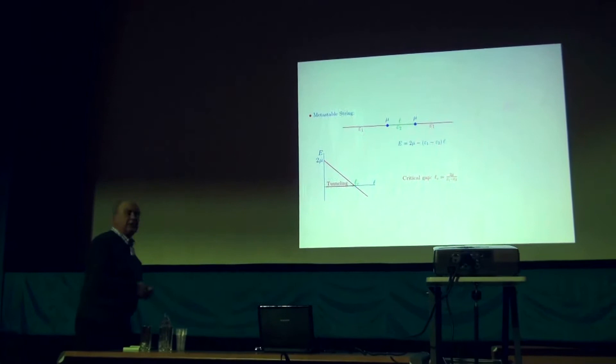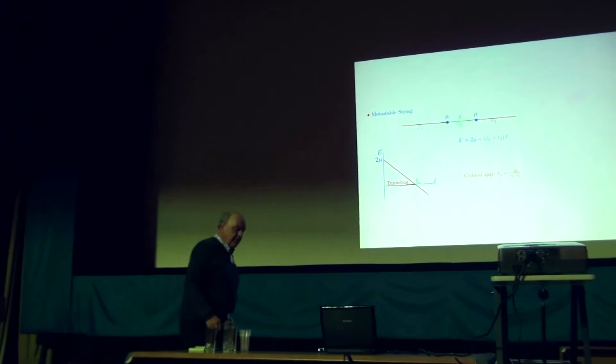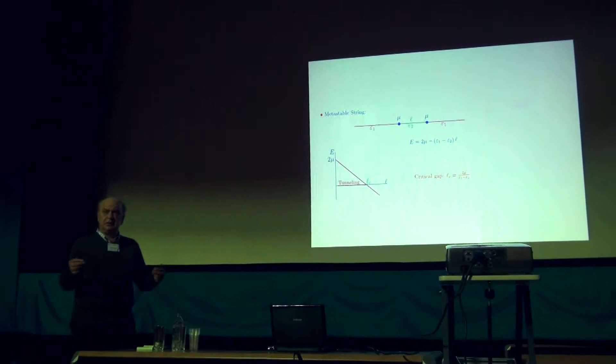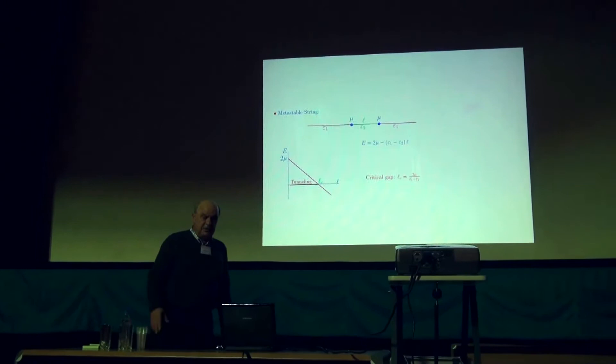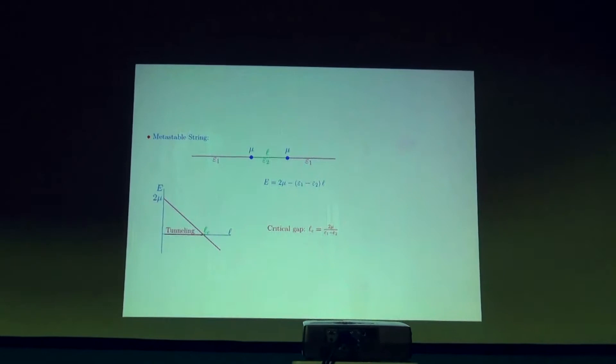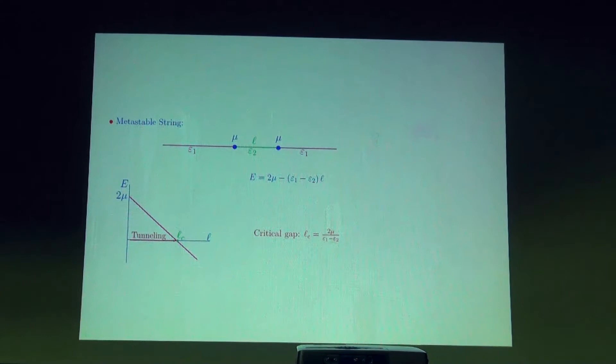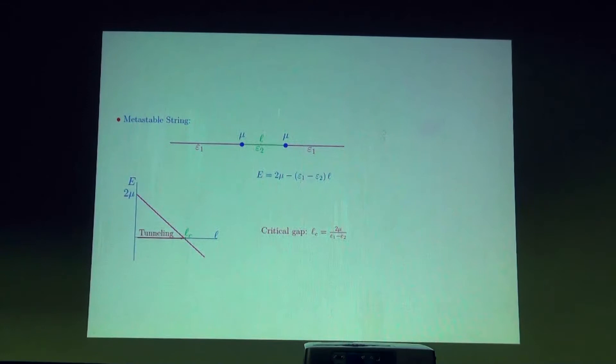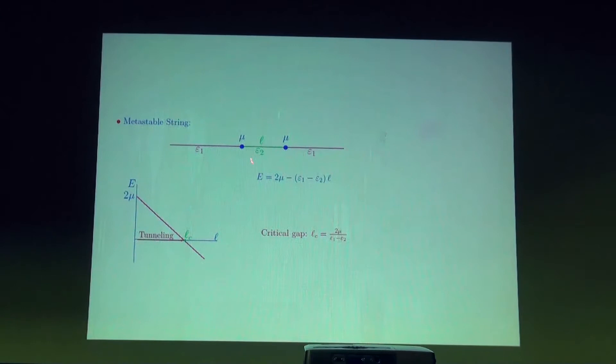I will start with the relativistic string. Consider a stream which is characterized by just one parameter: its tension. It describes all its dynamics, and the mass of the stream is given by the tension times the length. Consider a situation which may occur in a number of problems — for example, the breakup of the stream — when the stream can either break completely or undergo a phase transition to another stream with lower tension, Y2. The case when the stream breaks completely implies epsilon_2 equal to zero.